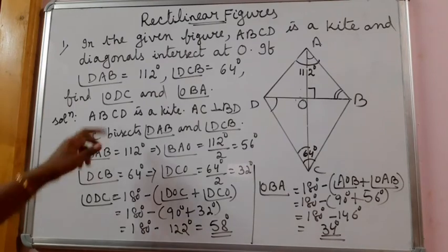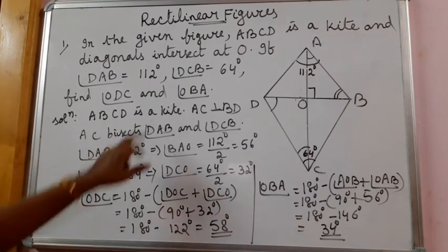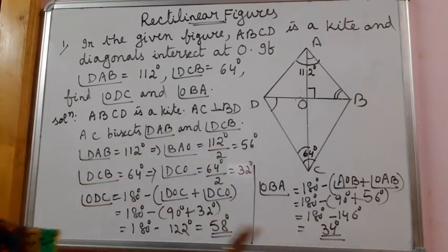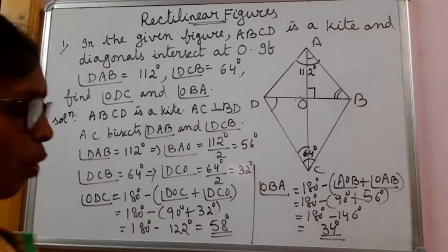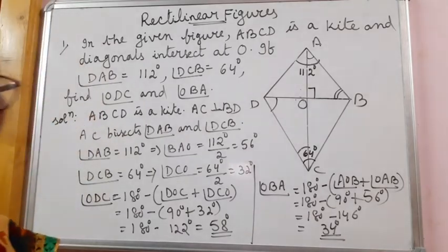So two bits asked us to find angle ODC and angle OBA. Angle ODC we got 58 degrees, and angle OBA we got 34 degrees.